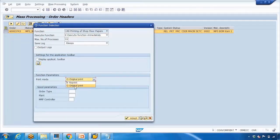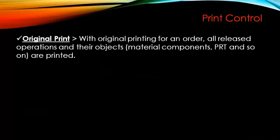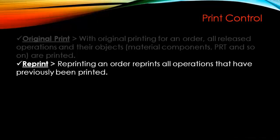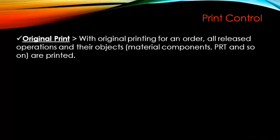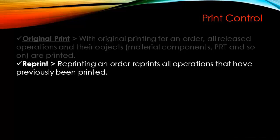Original print means all released operations and their objects — like material components, PRT, and so on — are printed. When selecting original print, all operations released up to that point will be printed. With reprint, it reprints all operations that have previously been printed. If new operations were released since the last print, original print will include those new operations, but reprint will only reproduce exactly what was printed last time. That is the main difference between the two modes.